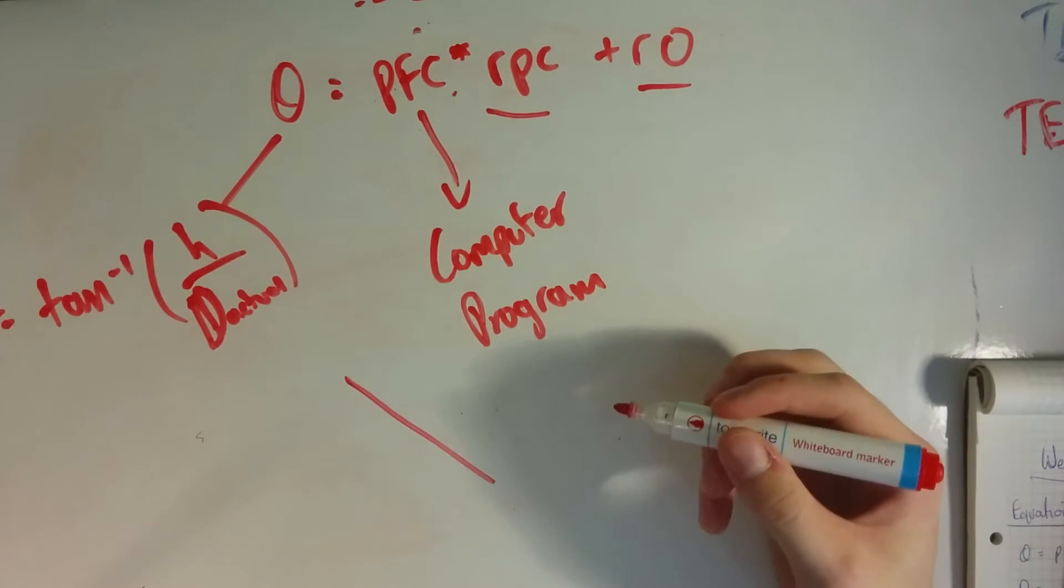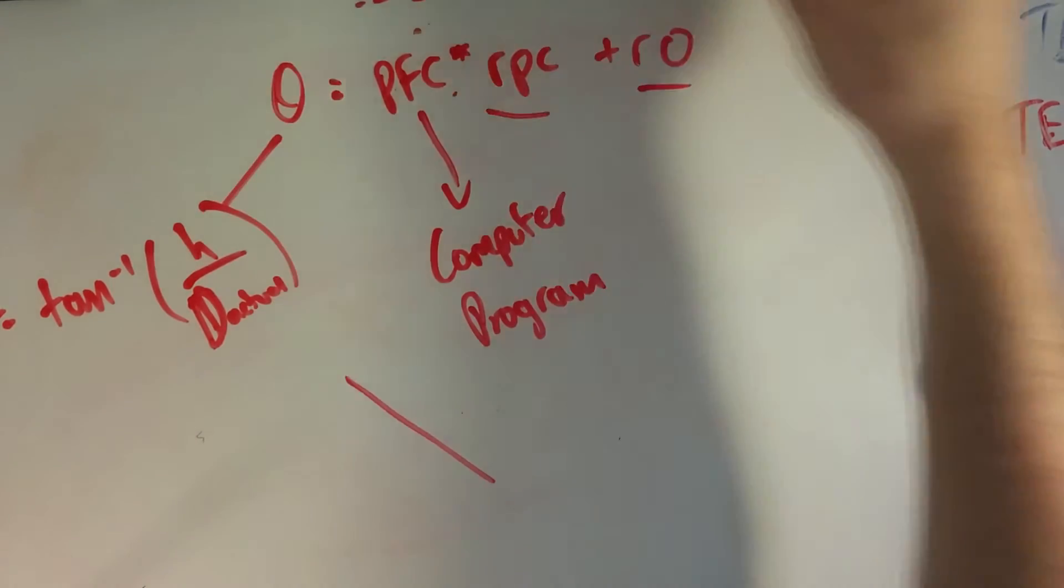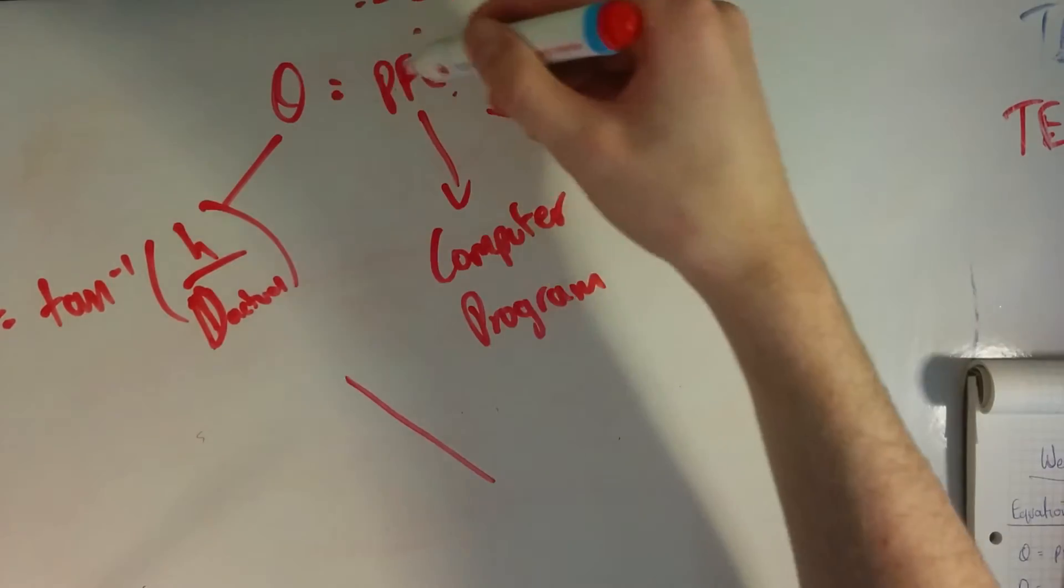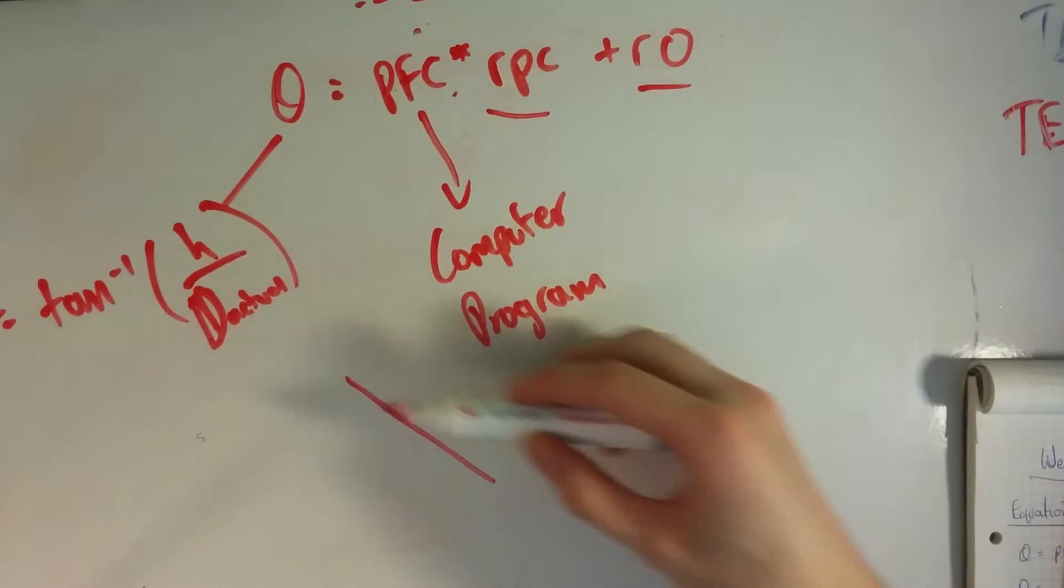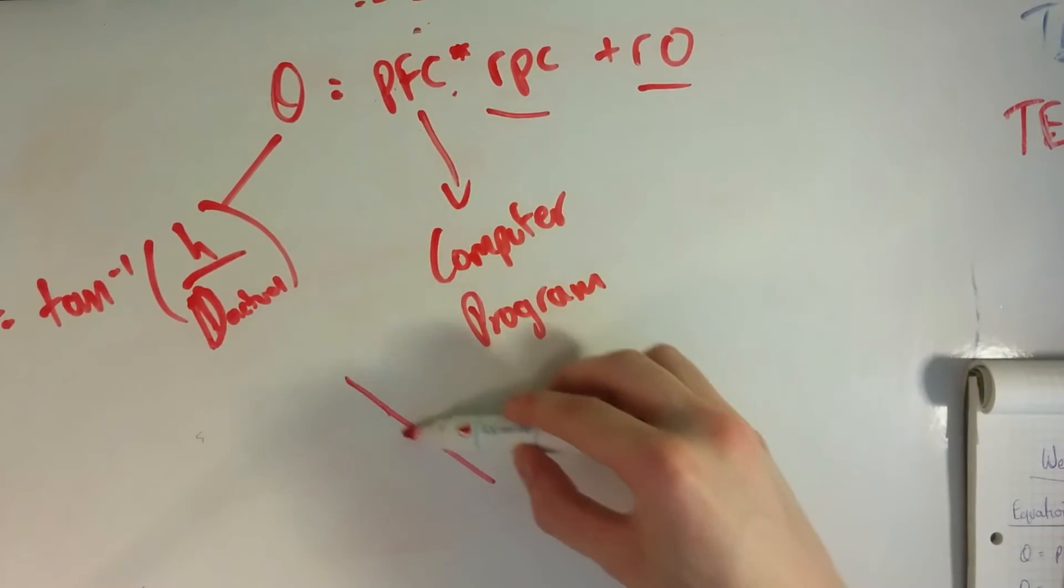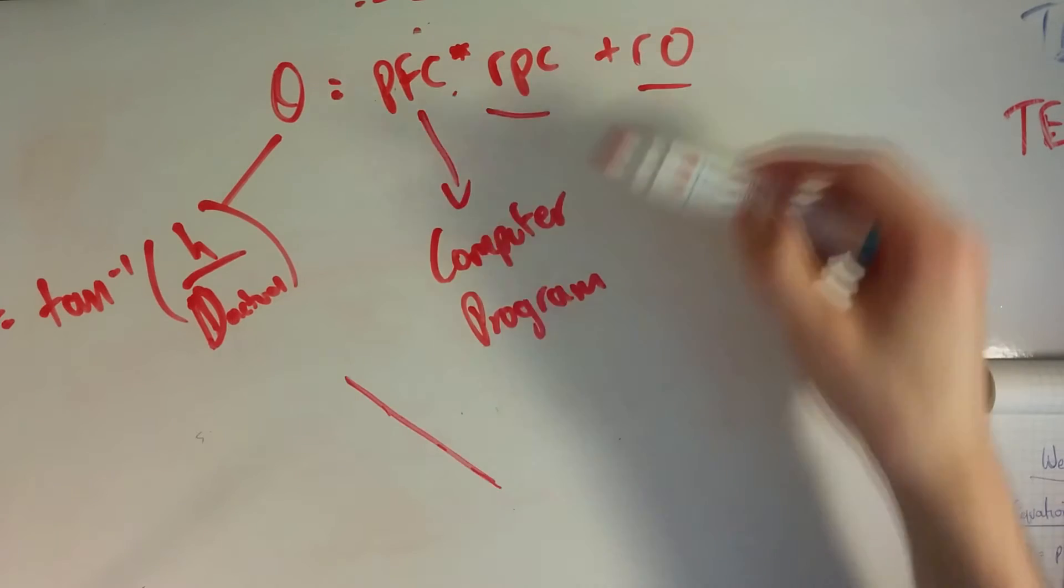And it will be very similar to this like y equals mx plus c. You can just compare the values of the trend line equation and that will give you rpc and r0.